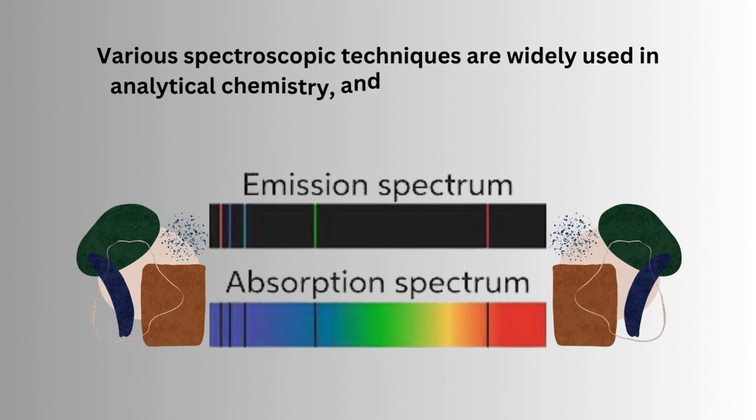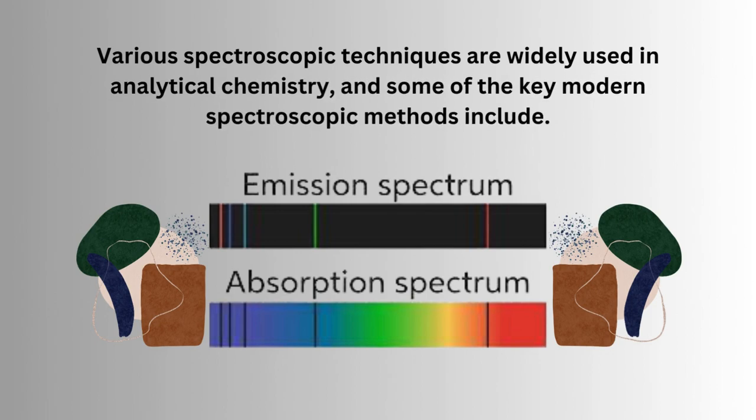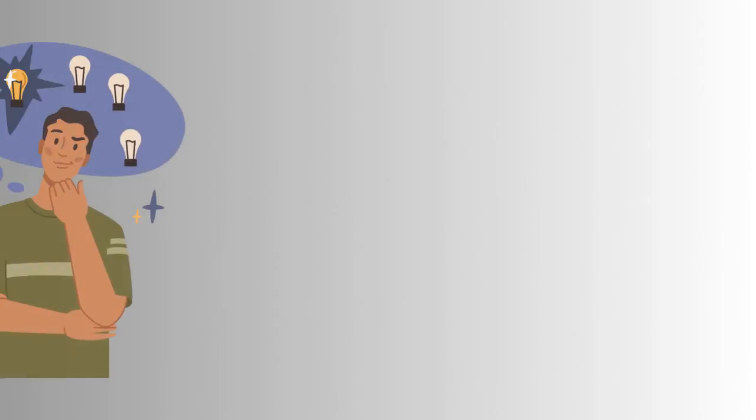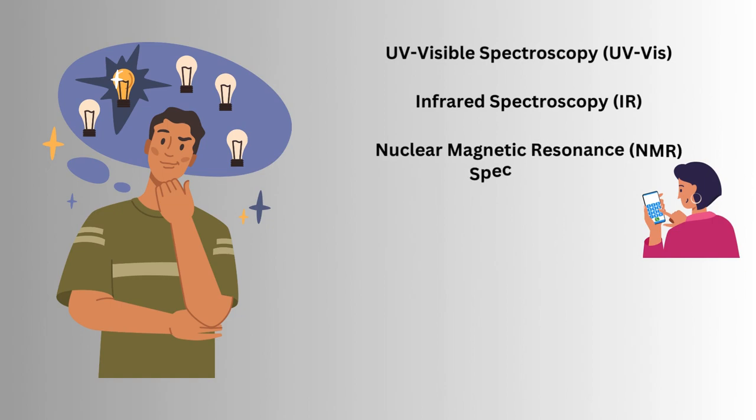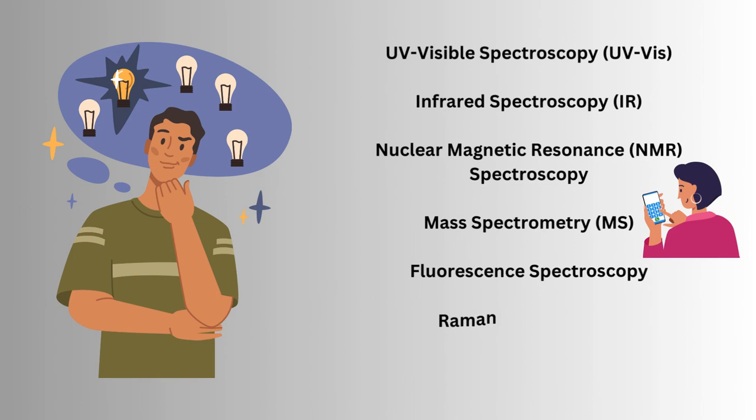Various spectroscopic techniques are widely used in analytical chemistry and some of the key modern spectroscopic methods include UV-visible spectroscopy, infrared spectroscopy (IR), nuclear magnetic resonance (NMR) spectroscopy, mass spectrometry (MS), fluorescent spectroscopy, Raman spectroscopy, and x-ray photoelectron spectroscopy (XPS).